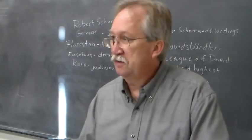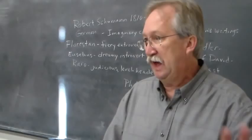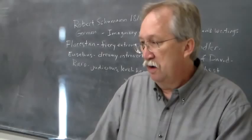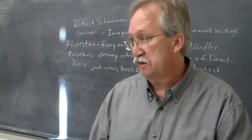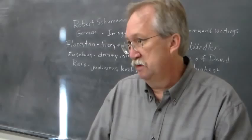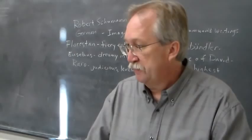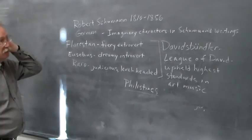His wife Clara continued this concept. Clara and Johannes Brahms were such good friends, and they were in this more conservative camp in the second half of the 19th century. They were in opposition to the 'music of the future' — the label Wagner coined for his own music, which Franz Liszt also supported. There was a lot of discussion about this divide.